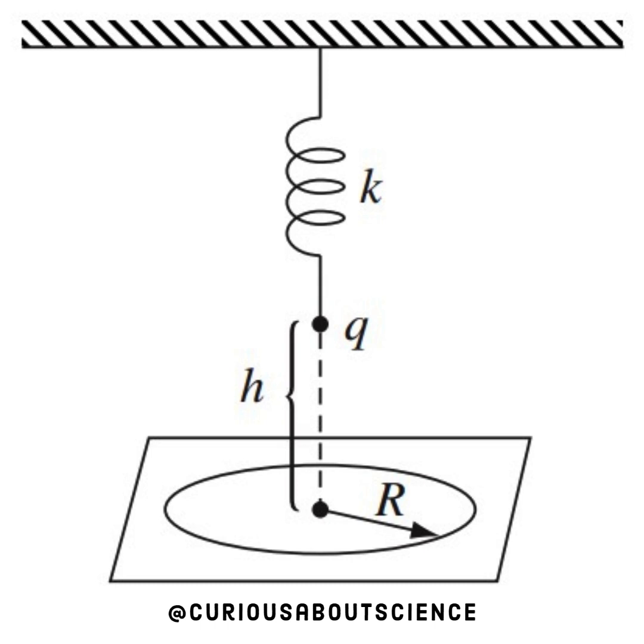Let's draw it out. We have a spring attached to the ceiling as indicated with the striped lines, some Q constant, height H is the equilibrium, and big R is the radius. Let's dive in then.